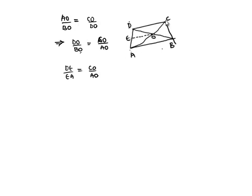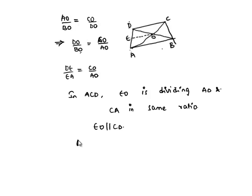Now in triangle ACD, a line segment EO divides AD and CA in same ratio. So from converse of basic proportionality theorem we can say that EO is parallel to CD. As AB is parallel to EO and EO is parallel to CD...